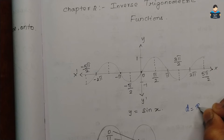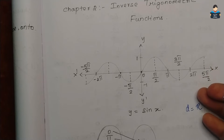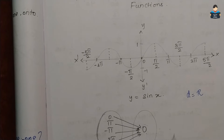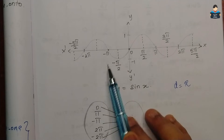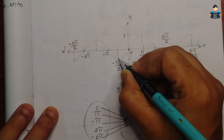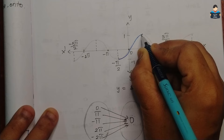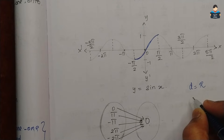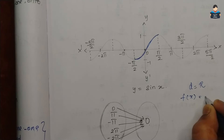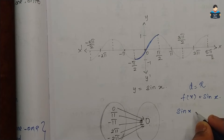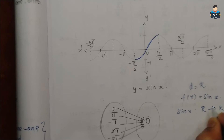The domain of sin x is real numbers. Because sin x with domain as real numbers is not bijective, we cannot get an inverse. So we need to take a restricted domain. The book gives us a specific domain to use. Looking at the graph, the range of sin x is minus 1 to 1, and the restricted domain we consider is minus pi by 2 to pi by 2.